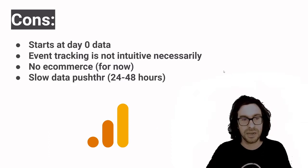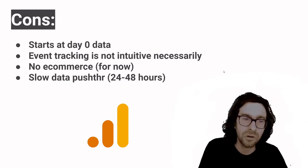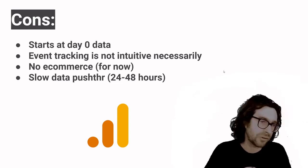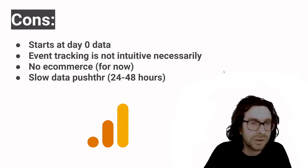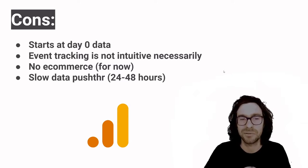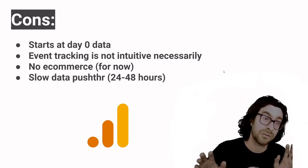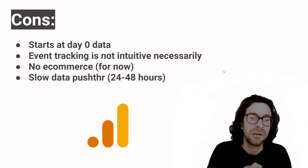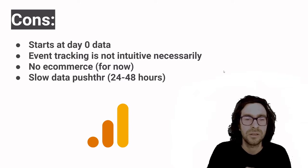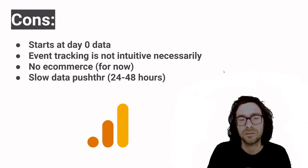The next con is there's no e-commerce for now — no enhanced e-commerce attribution. I know if you've got an e-commerce site you're clamoring for it. I'm almost certain that functionality is going to roll out soon. Keep in mind we're still in beta. Some users have also talked about the slow data push — it takes around 24 to 48 hours for you to see that data roll in.